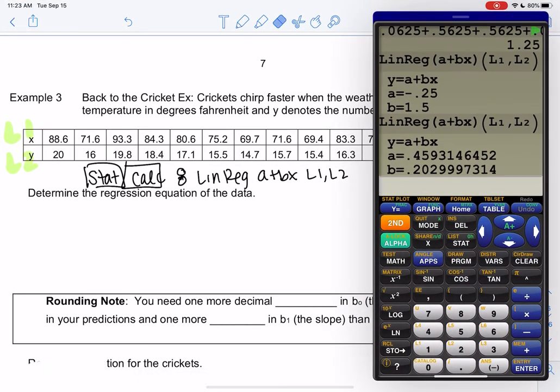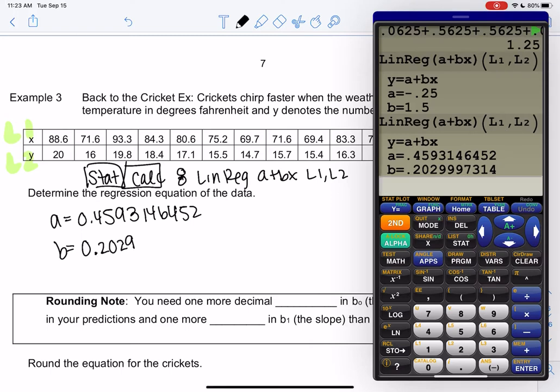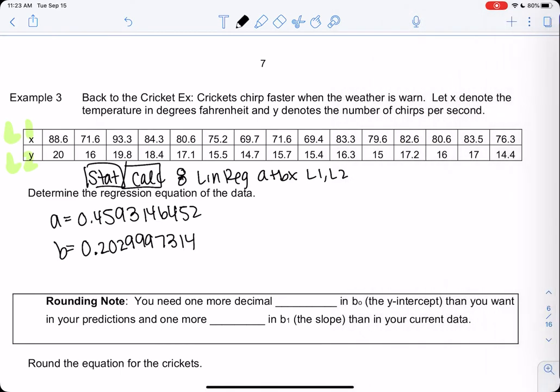We'll talk about rounding. You'll see below I'm going to do rounding. So we're just going to do a bunch of decimal places right now. I'm just going to keep everything for the time being. If you got these numbers but backwards, that means you probably chose the opposite menu. So we're going to say y hat equals 0.459314642, I know, plus 0.202999 and then don't forget the x. People often forget the x.